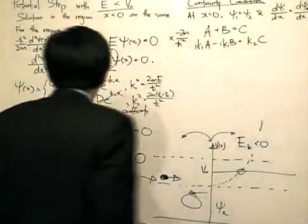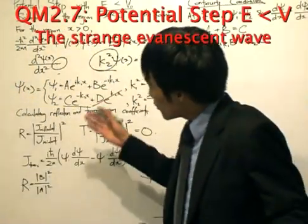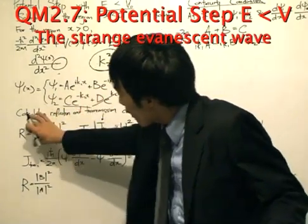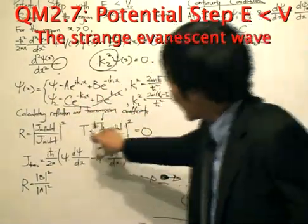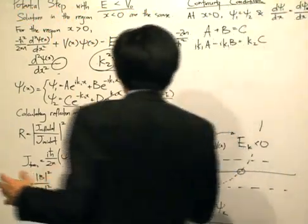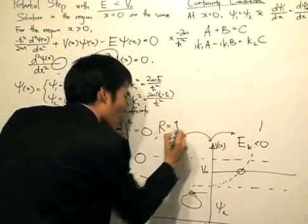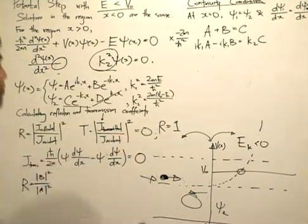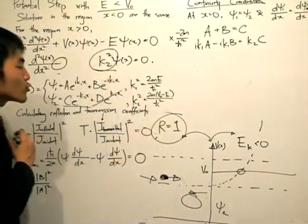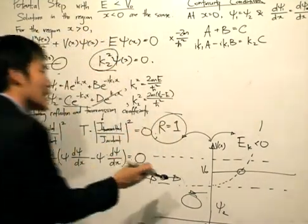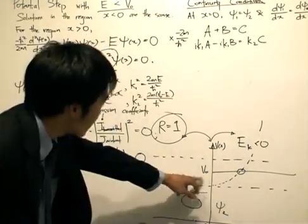What about the reflection coefficient? We recall that r plus t equals one. Since t equals zero, we may immediately say that r equals one. This may be quite clear, but we want to conclusively prove this result — that all particles will be reflected as they approach the potential step when the energy of the particle is less than the potential.